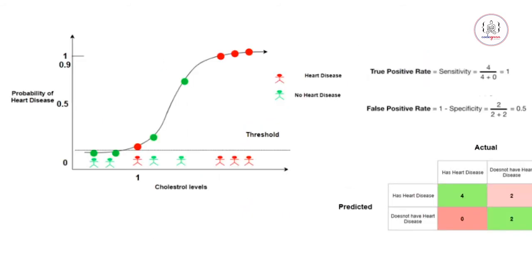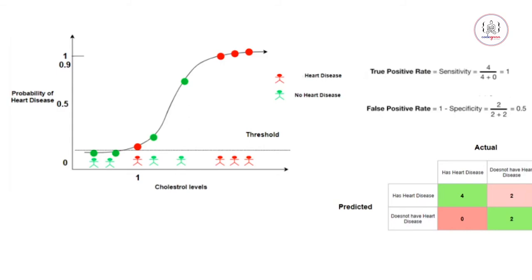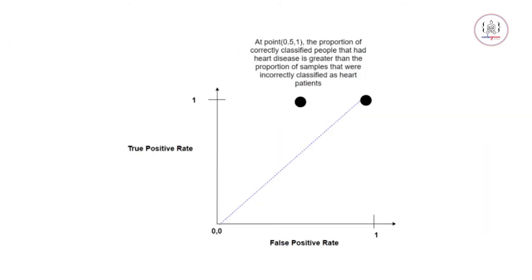Now we increase the threshold a little bit, draw the confusion matrix again, and calculate the true positive rate and false positive rate. This time the true positive rate is 1 and the false positive rate is 0.5. The true positive rate is high and the false positive rate is low. We plot this point on the graph, representing that the proportion of correctly classified heart disease patients is greater than those incorrectly classified.